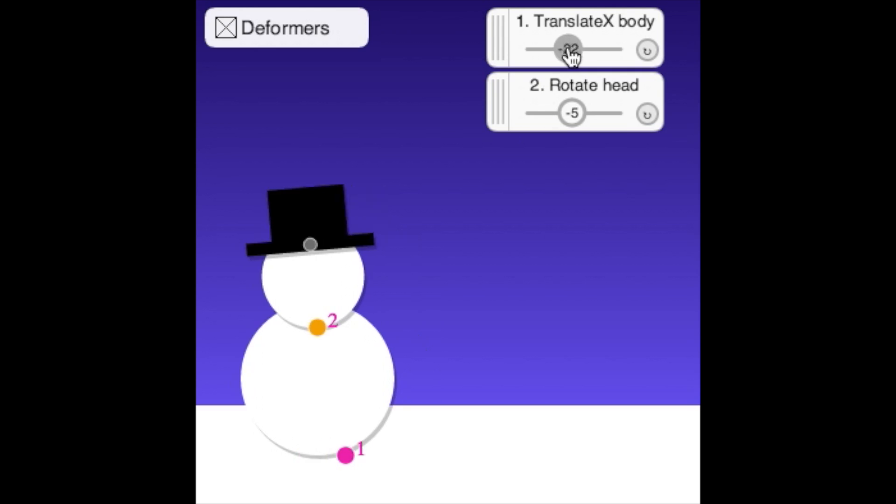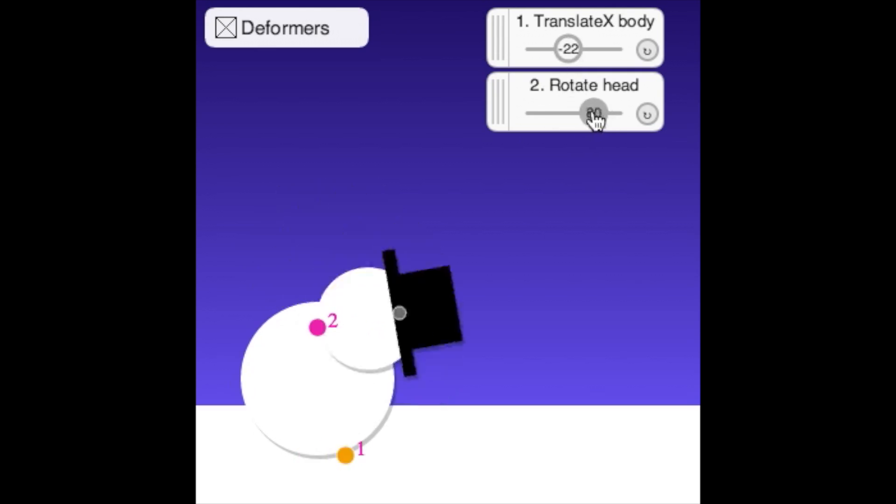All right, you finally have a snowman to start working with. Now we can get to the real guts of the rigging software. We need to define our scale, rotate, and translate deformers to allow you to move your shapes around.